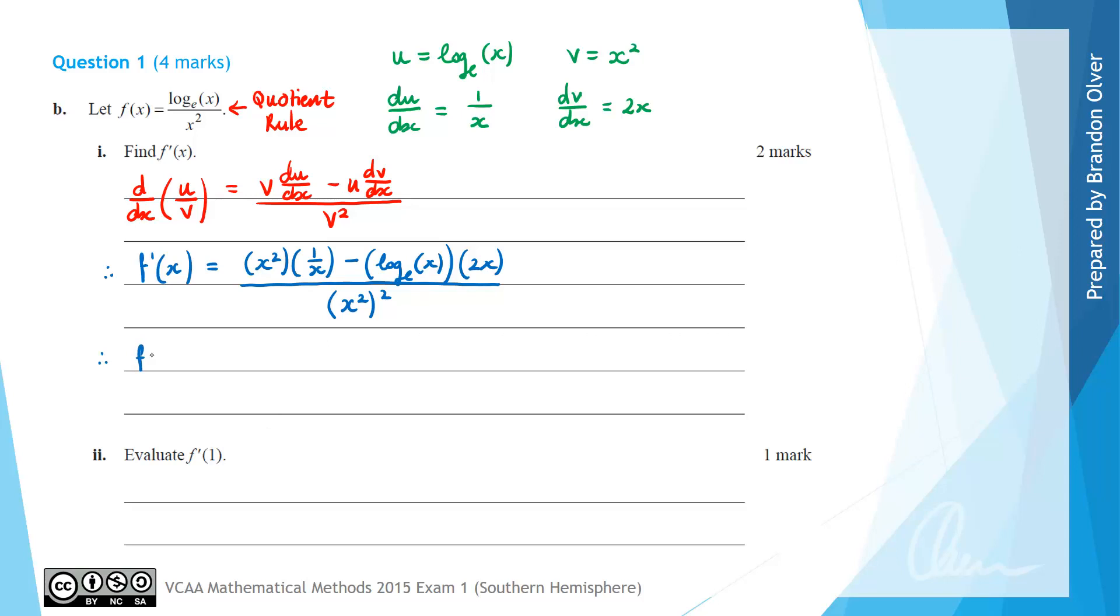Therefore, our f'(x) can be simplified to x squared times 1 over x is simply x. And then we get minus 2x log_e(x).